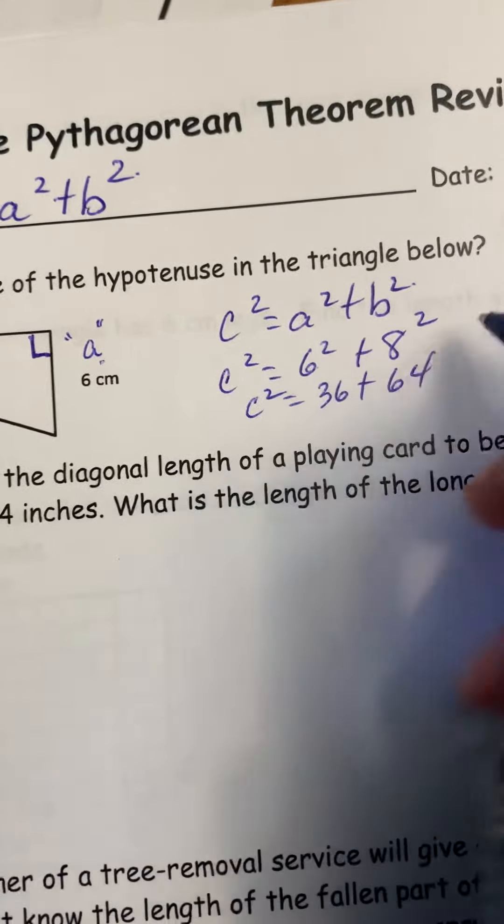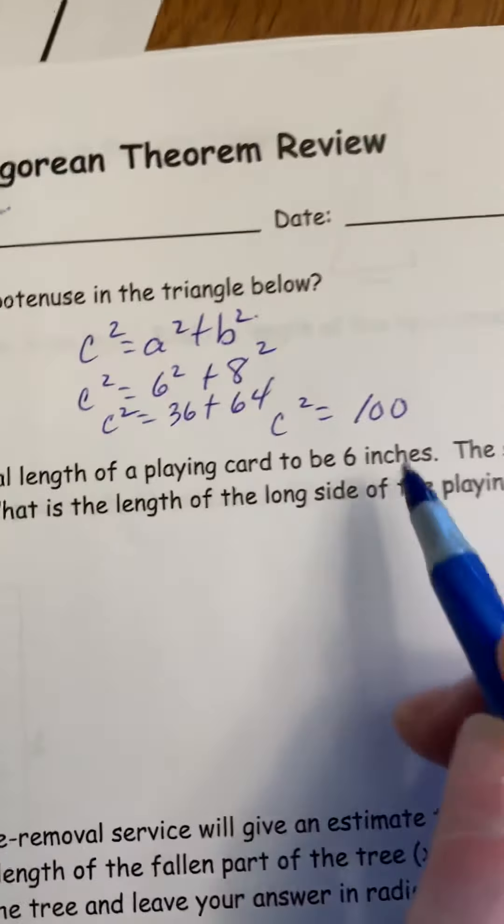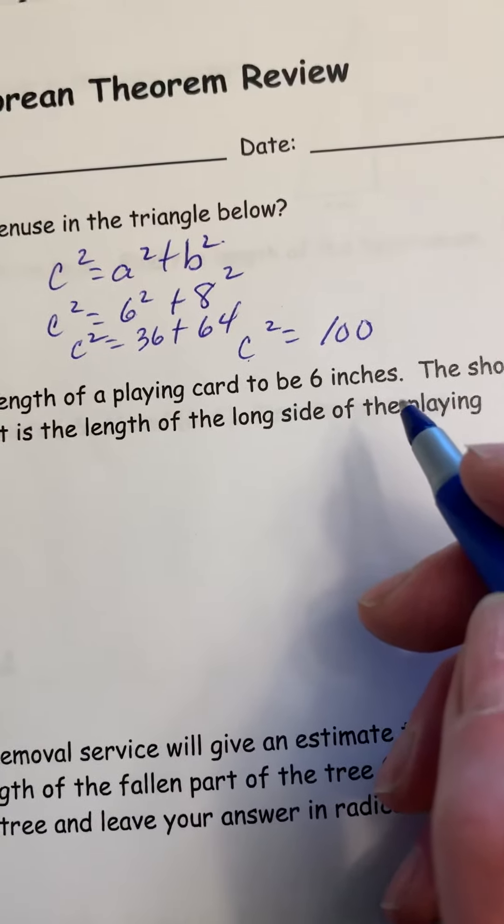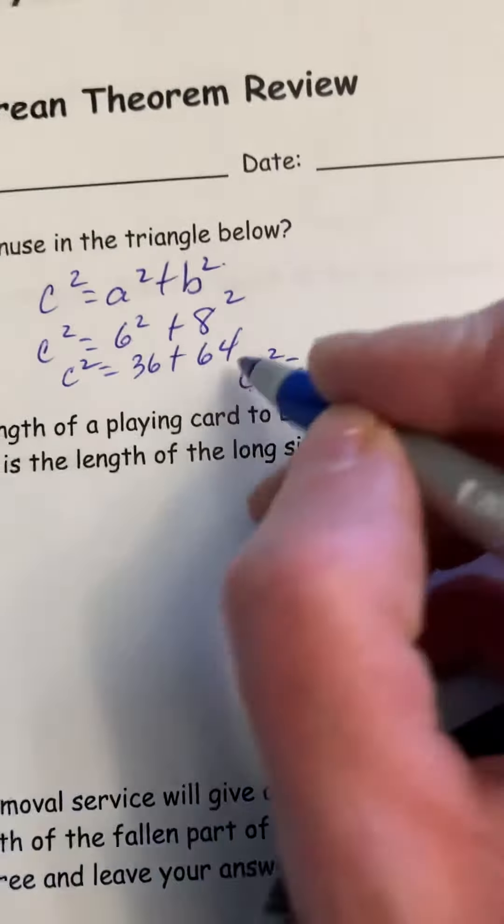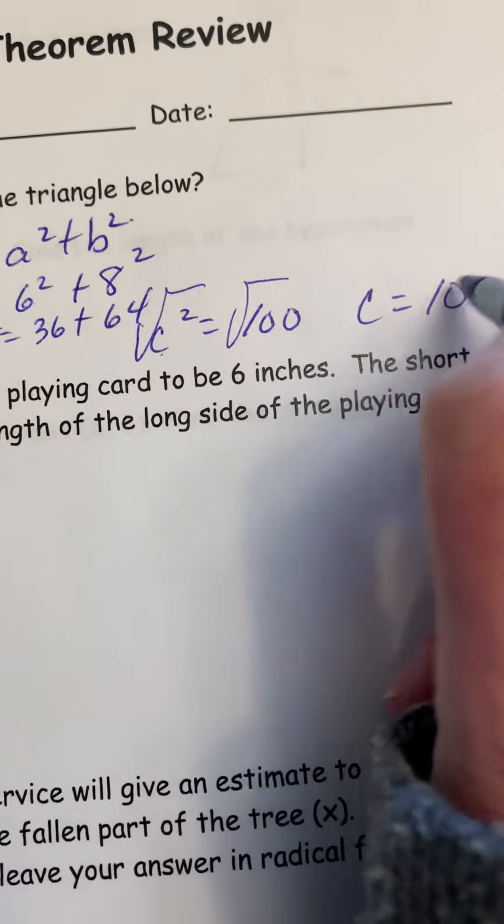36 plus 64, and when we work that out we get 100. And remember we're solving for C, and currently that's C squared. So just as algebra rules as well, we're going to do the inverse or opposite operation of squaring, which is finding the square root. Whatever we do to one side, we do to the other.